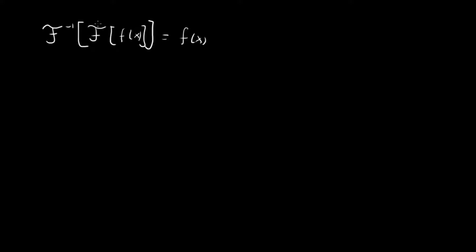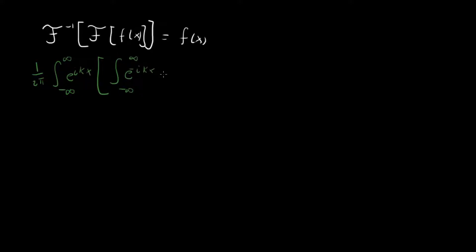The first thing to do is rewrite this whole thing using our integral definition for the Fourier transform. I'm using the convention of having the constant one over two pi out in front and not in the exponential. So we have one over two pi, integral from minus infinity to infinity — this is for the inverse transform — e to the i k x, and then the normal Fourier transform: integral from minus infinity to infinity of e to the minus i k x prime, f of x prime, dx prime, dk.